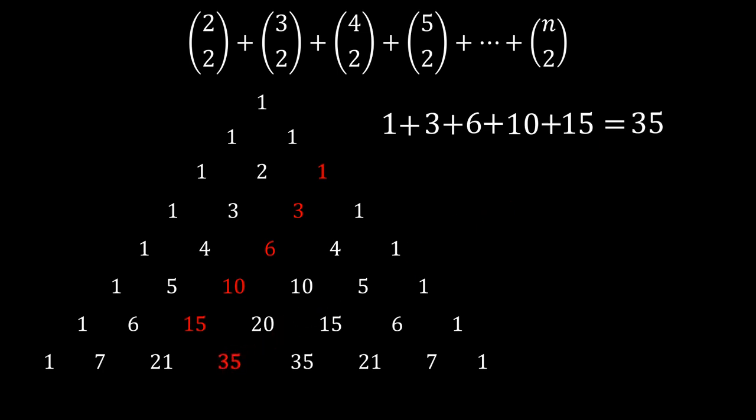This is the hockey stick identity, called the hockey stick because it looks like one. It not only works for n equals 6 but for other values and other starting points. In this case we will only be considering and proving the identity for the starting combination of 2 choose 2.